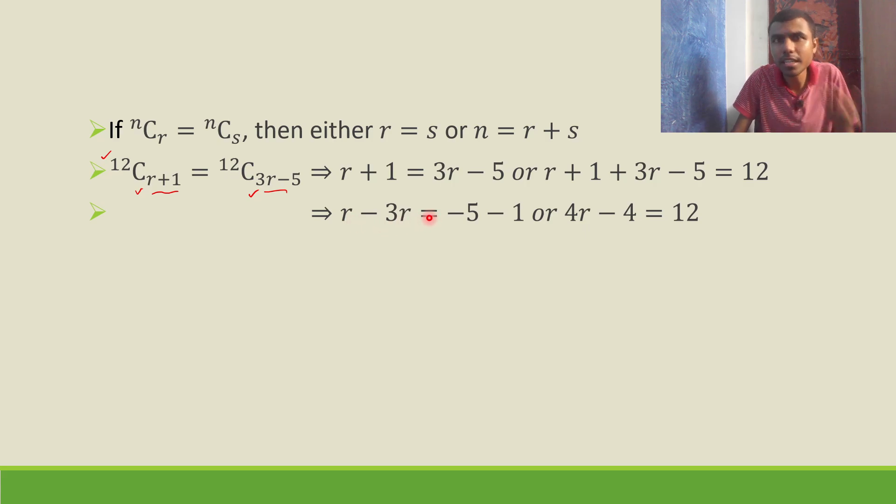Next, r - 3r = -2r, so -2r = -6, or 4r = 16. If you send -4 there, it will be 16.